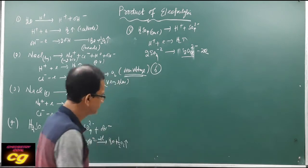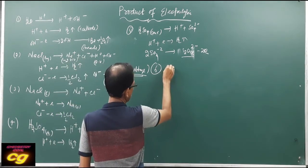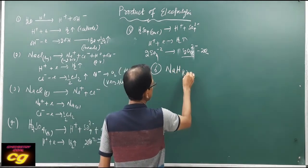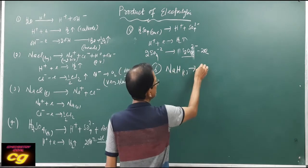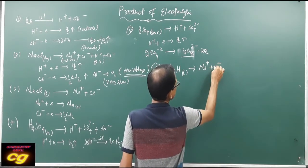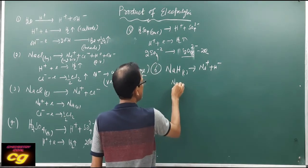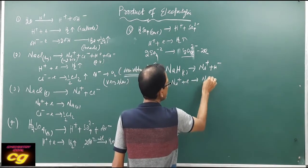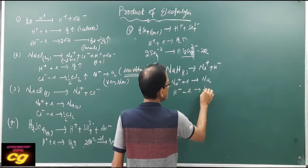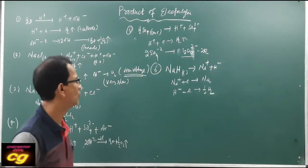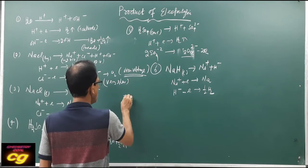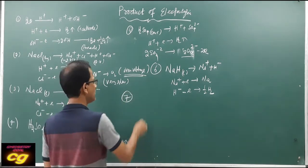For sodium hydride (NaH) in liquid state, it produces Na+ and H− ions. Na+ gains an electron at the cathode to become sodium metal, and H− loses an electron at the anode to become hydrogen gas. This is the result for the electrolysis of sodium hydride.